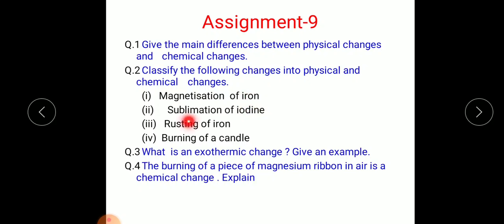So you need to classify what kind of changes they are. Question 3: What is an exothermic change? Give an example. Question 4: The burning of a piece of magnesium ribbon in air is a chemical change. Explain how it is so. Complete this assignment and send it to my email.